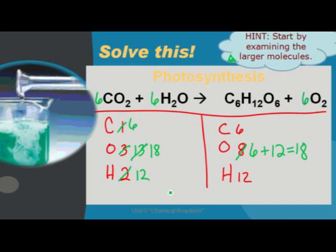That is a balanced equation. We have six carbons on both sides of our equation. We have 18 on both, and 12 for hydrogen. So this fits the law of conservation of mass. We have equal amounts of all the atoms on both sides of our equation.